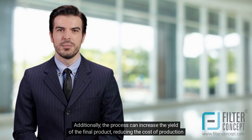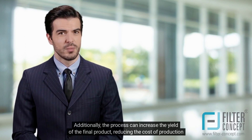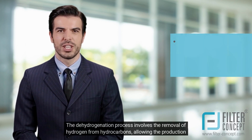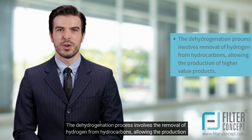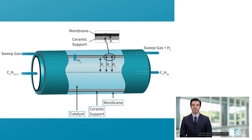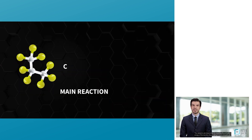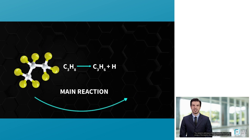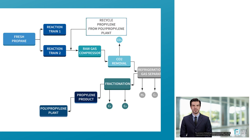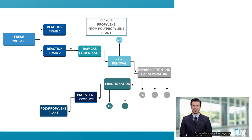Additionally, the process can increase the yield of the final product, reducing the cost of production for the refinery. The dehydrogenation process involves the removal of hydrogen from hydrocarbons, allowing the production of higher-value products. The process is typically conducted in a catalytic cracker unit, where the catalysts used are either metallic or acidic in nature. The catalysts are responsible for lowering the activation energy of the reaction, thus making it more energetically favorable.